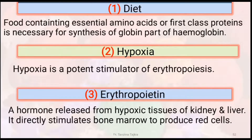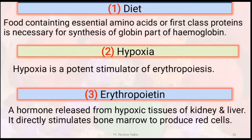First, diet: food containing essential amino acids or first-class protein, which is necessary for synthesis of the globin part of hemoglobin. Hypoxia is a potent stimulator for erythropoiesis. Then erythropoietin — this is a hormone which is released from hypoxic tissue of the kidney and a small amount from the liver. It directly stimulates the bone marrow to produce red blood cells.